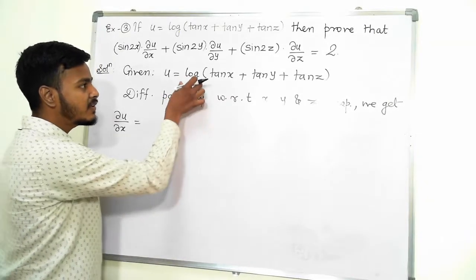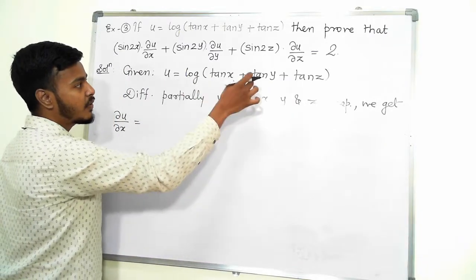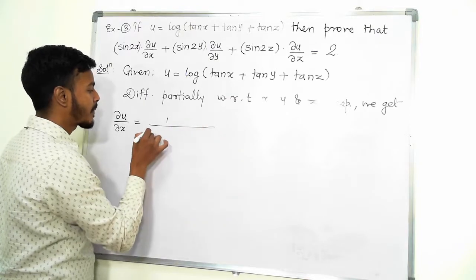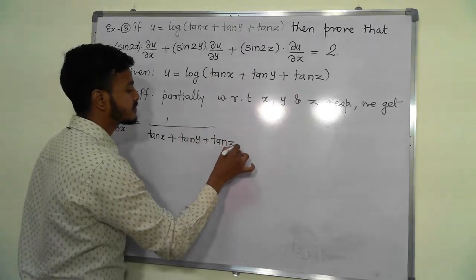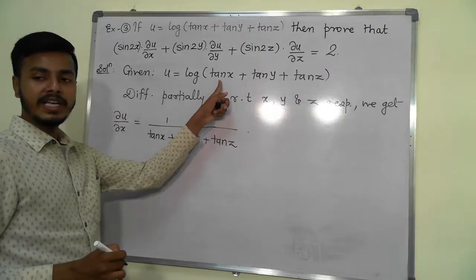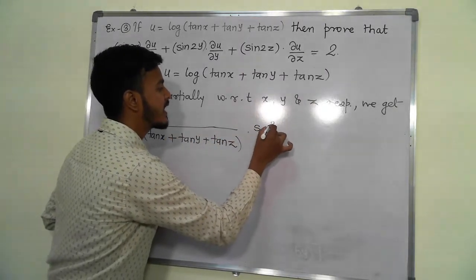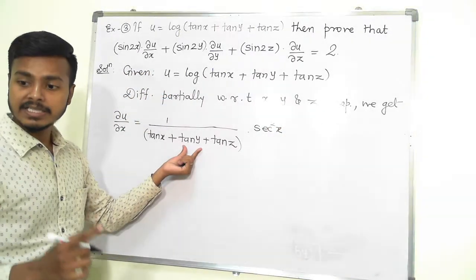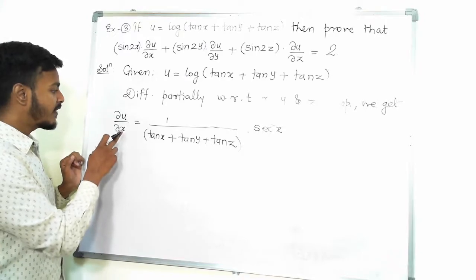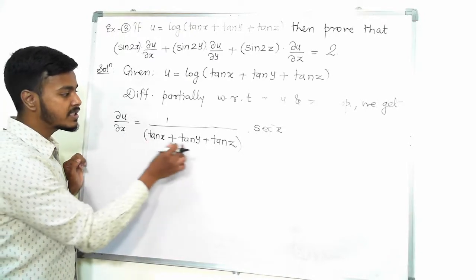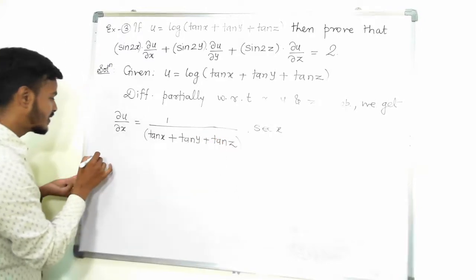The derivative of log of something is 1 upon that something. So del u by del x equals 1 upon tan x plus tan y plus tan z, multiplied by the derivative of tan x with respect to x, which is secant squared x. Derivatives of tan y and tan z with respect to x are 0, since y and z are treated as constants.